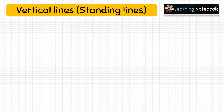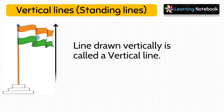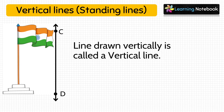The second type is vertical line, also called a standing line. Look at a flag mast — it is standing vertically on the ground. Similarly, a line which is drawn vertically is called a vertical line. Here, CD is drawn vertically so it is a vertical line. Anything lying flat is said to be in a horizontal position, while anything standing straight upright is said to be in a vertical position.